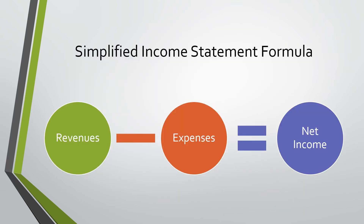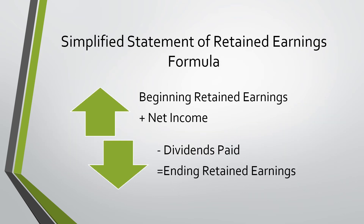The simplified income statement formula is revenues minus expenses equals net income, and it will stay this simple for most of this class. A simplified statement of retained earnings formula would be beginning retained earnings plus net income minus dividends paid equals ending retained earnings.